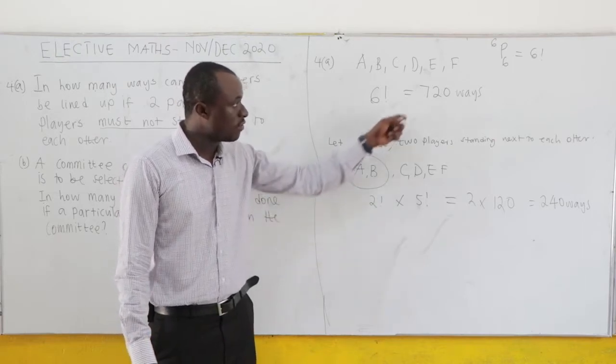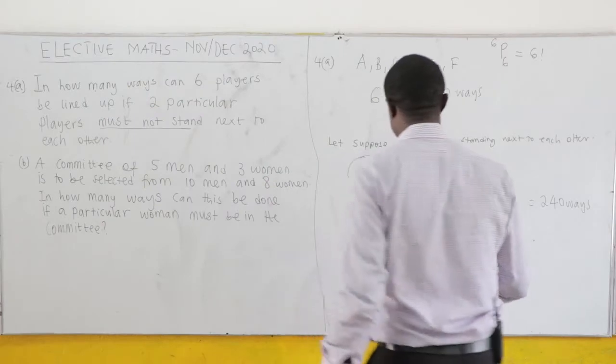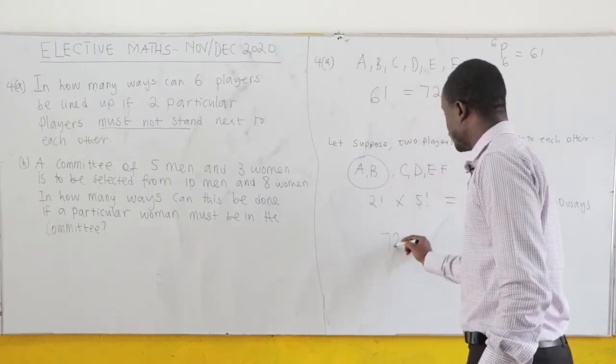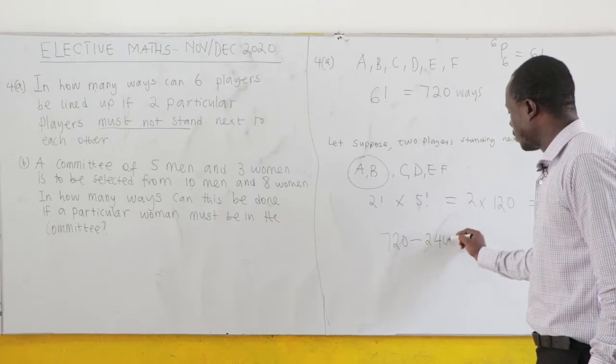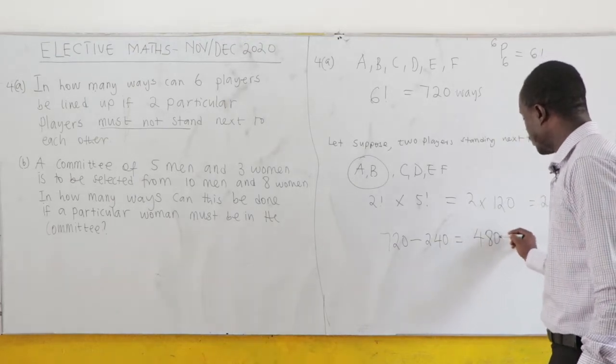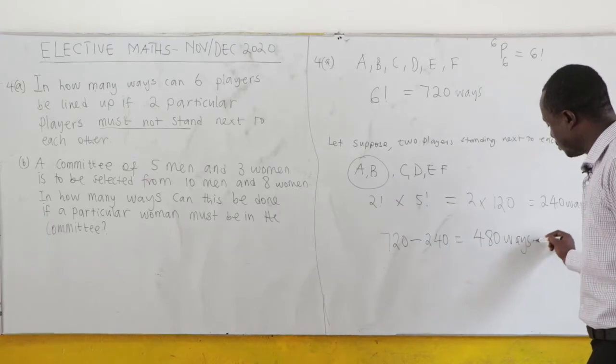So you have 720 minus, that is 240. And this is 480 ways. And this is our answer.